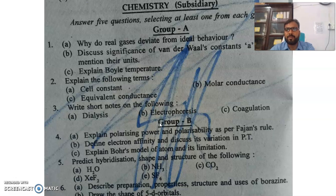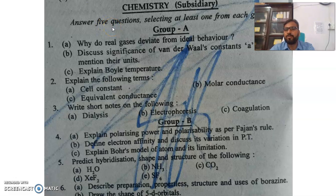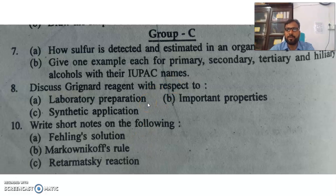You should know the pattern of questions of our university. Before attempting any questions, you should read the instructions. You can see here: answer 5 questions, selecting at least one from each group. So, Group A has 3 questions, Group B has 3 questions, and Group C has 3 questions.